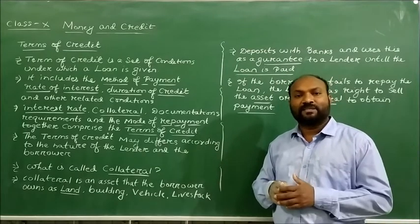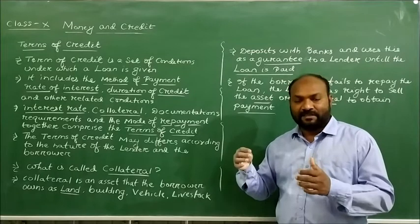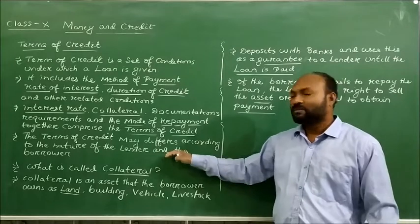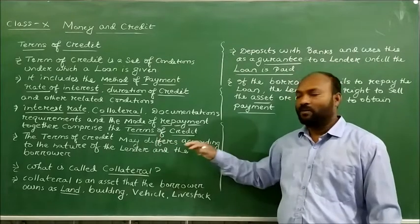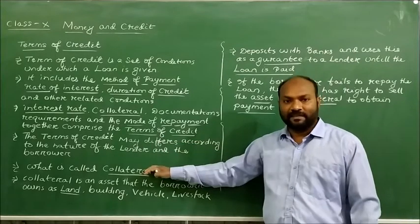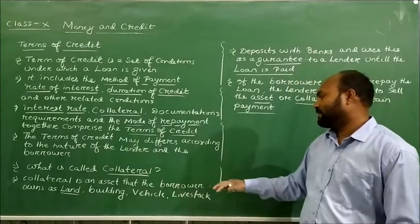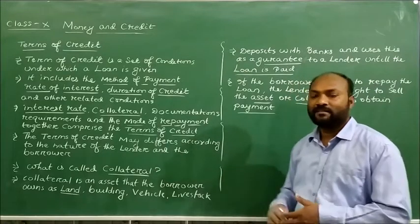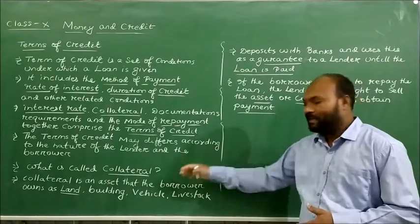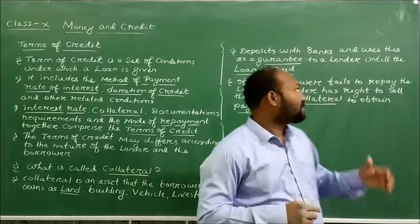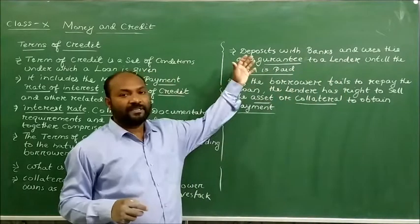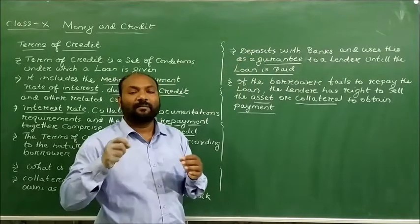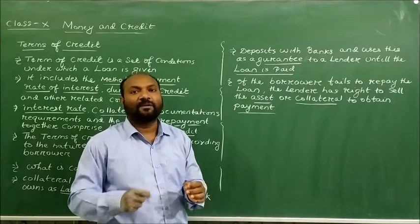Collateral is very important and it is provided at the time of taking a loan. Collateral includes assets that the borrower owns, such as land, building, vehicle, livestock, and deposits with the banks. All these come under the category of collateral.